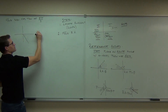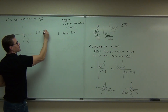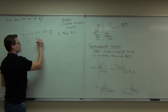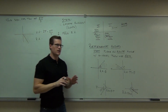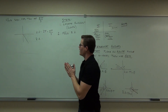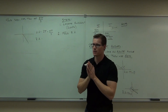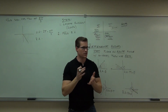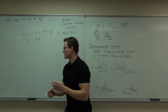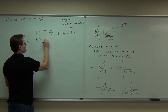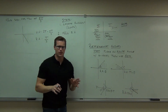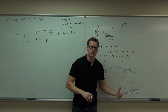The reference angle should be something in the first quadrant. 2 pi minus 5 pi over 3 equals 6 pi over 3 minus 5 pi over 3, which is pi over 3. We've located the quadrant — it's the fourth — and we used that to find the reference angle, pi over 3.